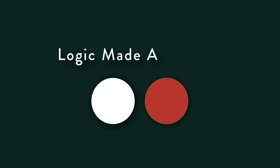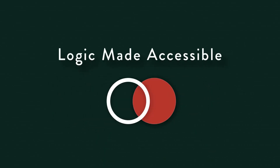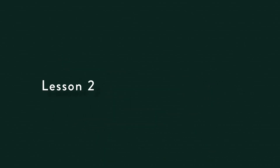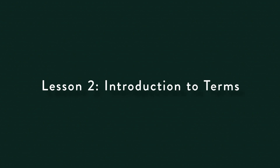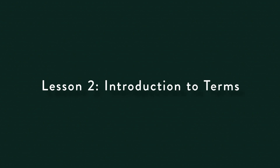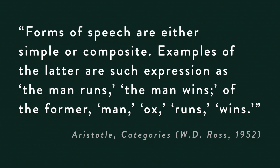We will nuance and refine each of these further in future modules. For now we look at terms. Forms of speech are either simple or composite. Examples of the latter are such expressions as 'the man runs,' 'the man wins.' Of the former: man, ox, runs, wins.